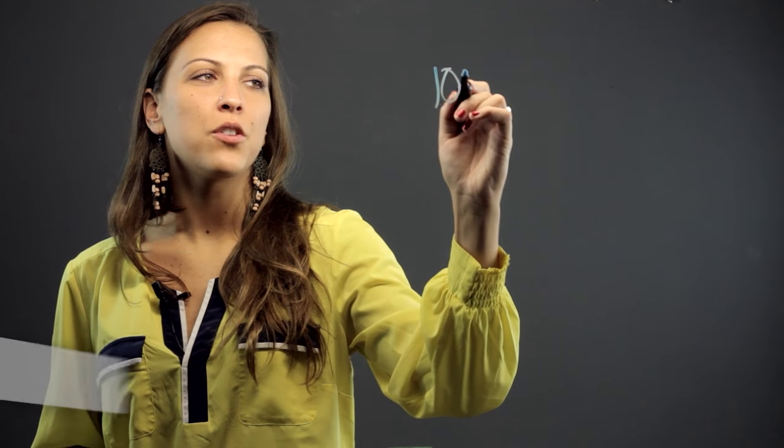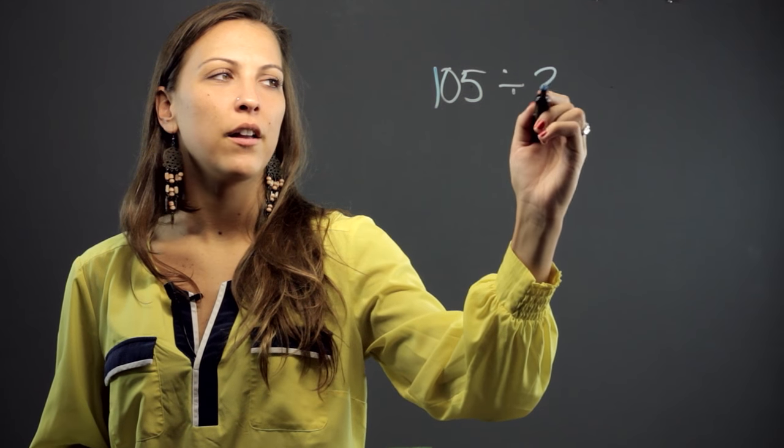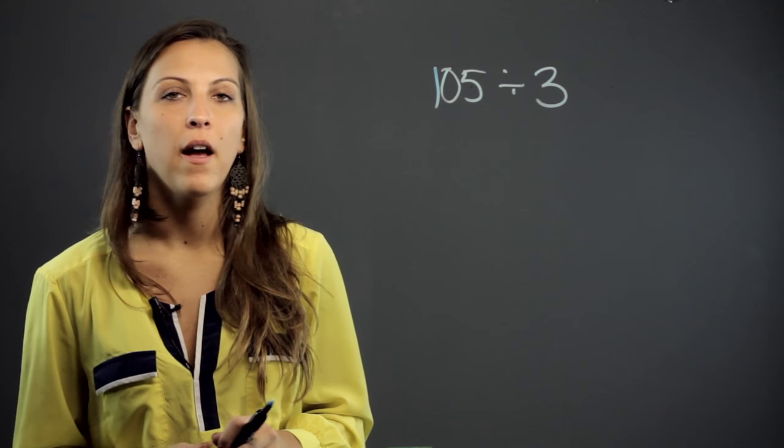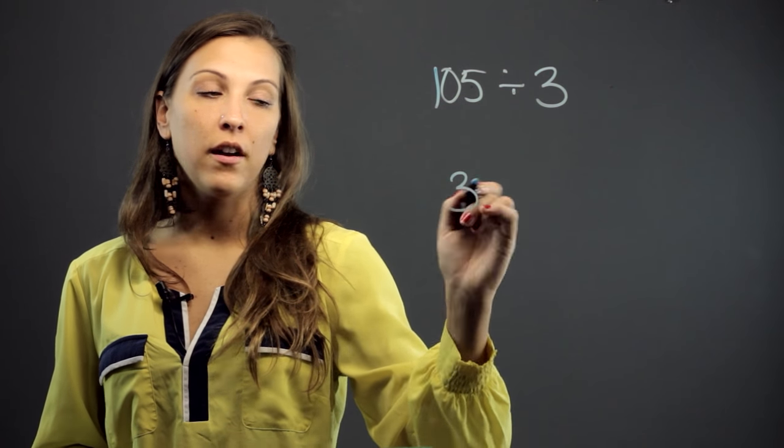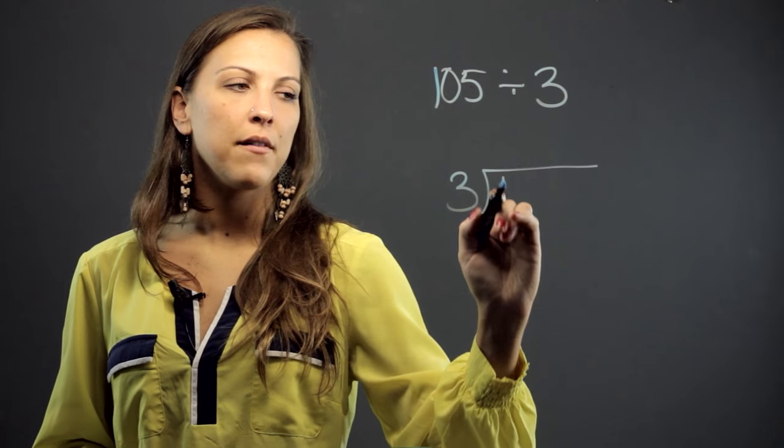So we have a problem like 105 divided by 3. We're going to go ahead and set it up the long division way. So the second number is going to go outside of the house, and the 105 is going to go inside.